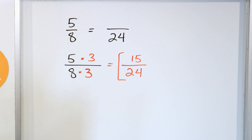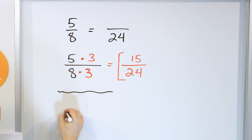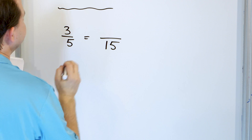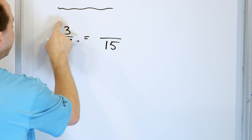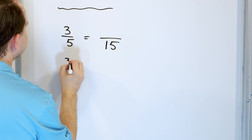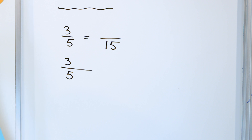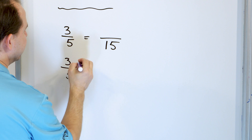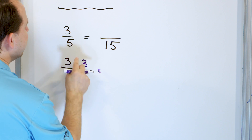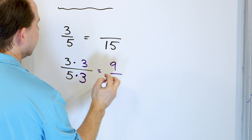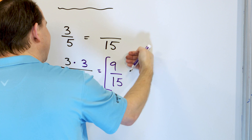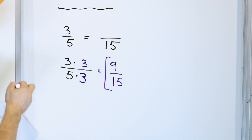All right, moving right along. Let's take a look at the fraction 3/5, and we're going to say that we have an equivalent fraction with 15 in the denominator. So we take our fraction 3/5, and we can multiply top and bottom by anything we want. But we know we need to multiply by 3. Why? Because 5 times 3 is 15, and that's what we're trying to get to. So 3 on the top: 3 times 3 is 9. And 5 times 3 is 15. So the answer is that 3/5 of a pizza is exactly the same amount of pizza as 9/15 of a pizza. Exactly the same thing.